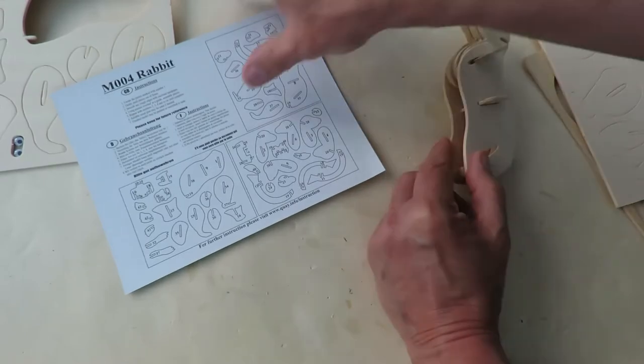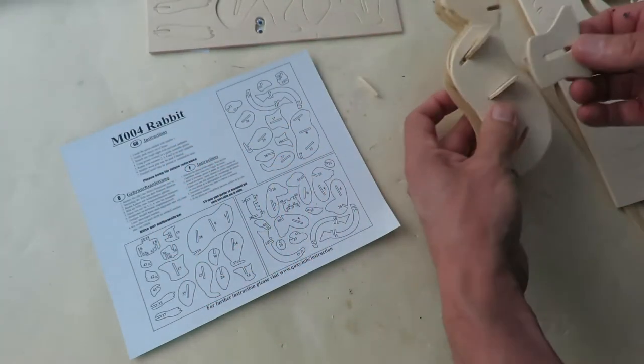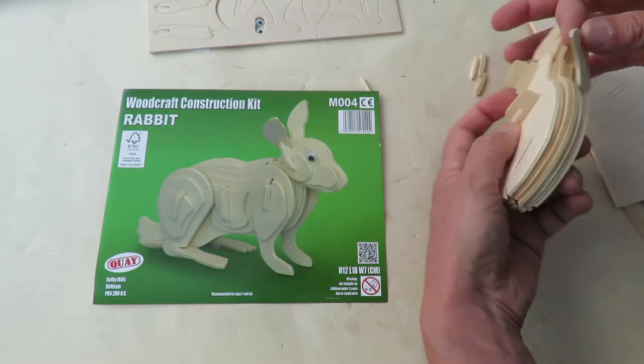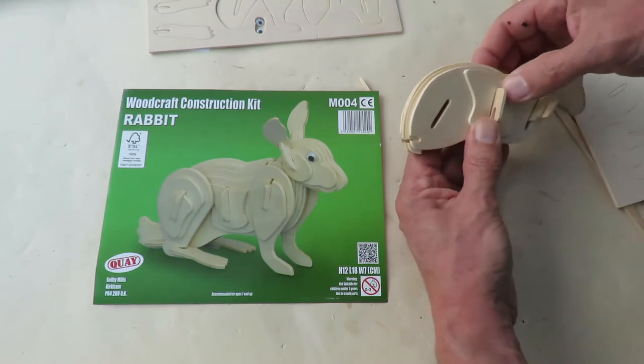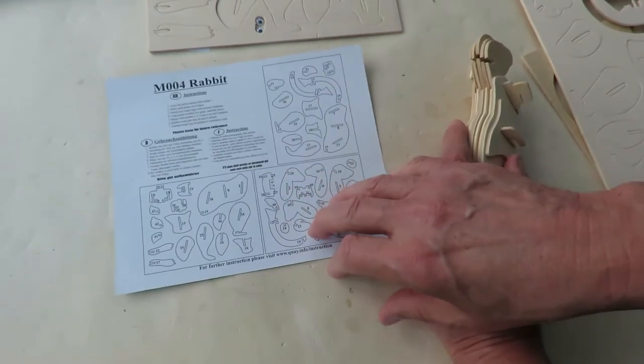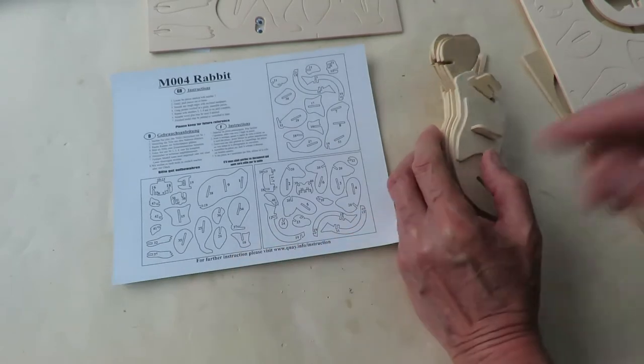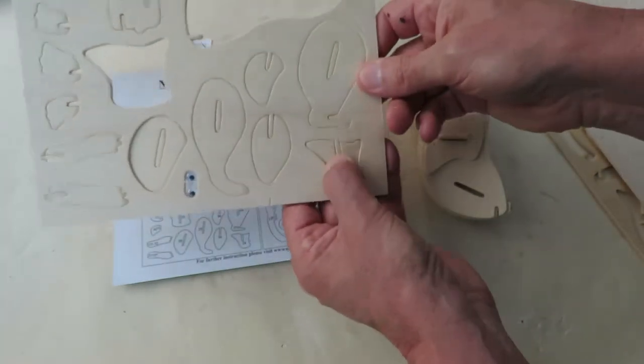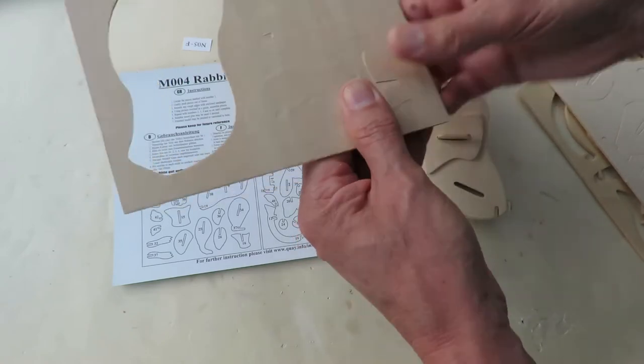Yeah, that's going to go in there. Eleven. Twelve. Thirteen. They do have to go in the right order because they're slightly different sizes to give it a bit of curve on its back. Fourteen. There we are, so he's got a little bit of a curve on his back. And if you're really keen you could sand it to make it nice and smooth. Right, that's fourteen. Where's fifteen? Fifteen is that piece.